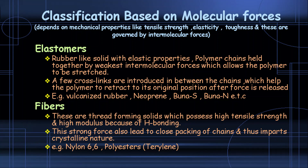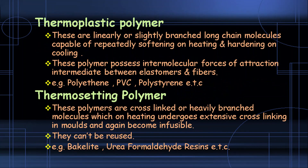Based on molecular forces, polymers are classified into elastomers, fibers, thermosetting polymers, and thermoplastic polymers. Elastomers have rubber-like elastic properties with cross-links introduced to make them elastic. Fibers are thread-forming solids with strong intermolecular forces that create close packing between chains. Thermosetting polymers are heavily cross-linked with branched molecules, while thermoplastic polymers are slightly branched and loose, possessing intermolecular forces intermediate between elastomers and fibers.